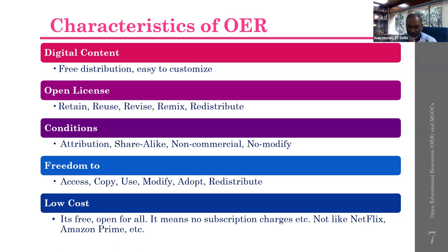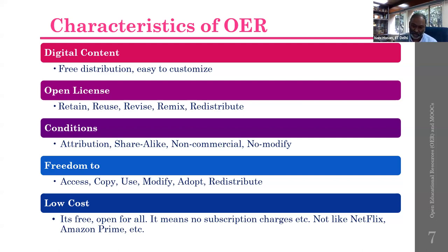The important features or characteristics of OER can be divided into categories: digital content, open license conditions, and freedom or low cost. As digital content, OER allows free distribution and is easy to customize. Under open license, you can retain, reuse, revise, remix, or redistribute. The conditions involve open or creative commons licenses — attribution, share alike, non-commercial, no modify. There are basically six types of creative commons licenses which may be applied to OERs and MOOCs.